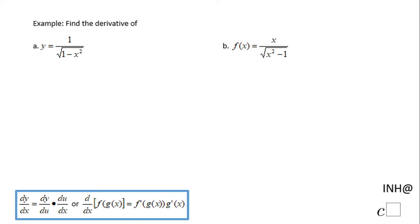Welcome or welcome back to C squared. In this example, we're going to find the derivative of these two functions. I'm going to use what is called the chain rule, which is down here, and also the quotient rule, because on both examples A and B, we have two quotients. So let's start with the first one.